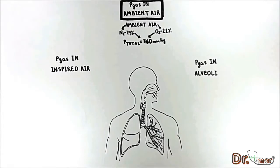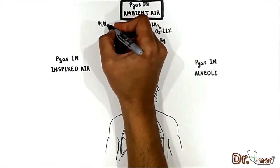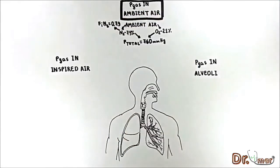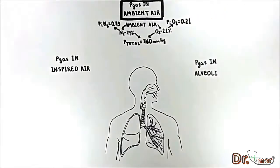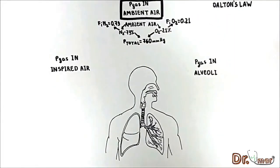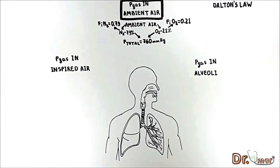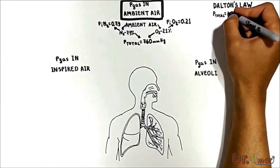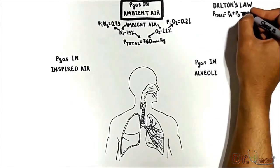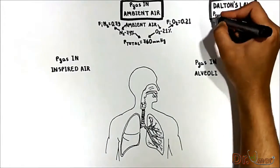Gas concentrations may be expressed as fractional concentrations in an inspired gas mixture. In our atmosphere, the fraction of nitrogen is 0.79 and the fraction of oxygen is 0.21. According to Dalton's law, the total pressure is equal to the sum of the partial pressures of gases in a mixture, meaning P total equals PA plus PB plus PC, and so forth.